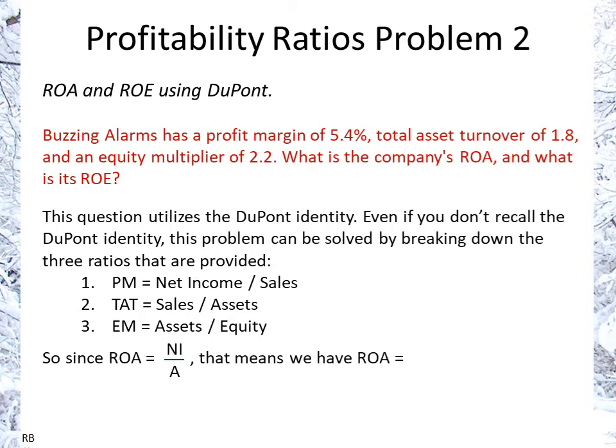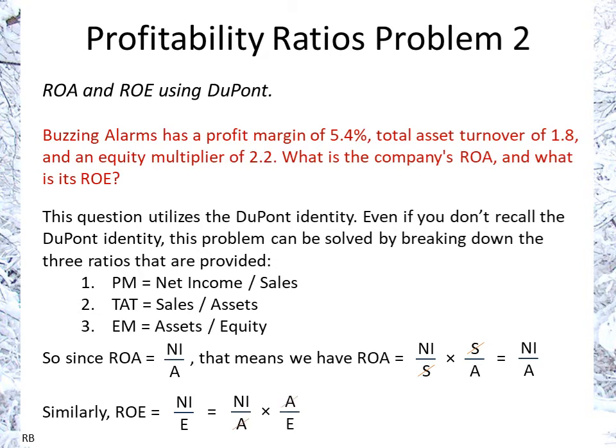Return on assets is net income over assets, so if we break it down into net income over sales times sales over assets, then we get the answer. As you can see, we have net income over sales and we have sales over assets. Similarly, return on equity is net income over equity, which is the same as net income over assets times assets over equity.